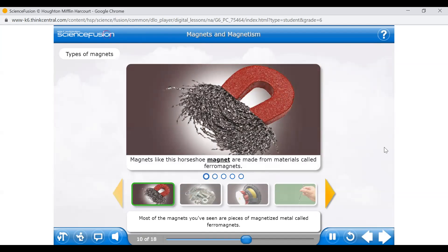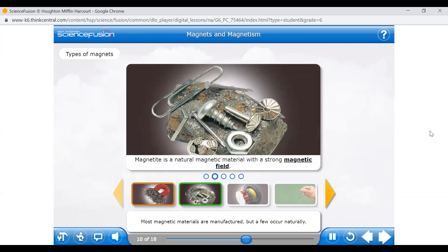Most of the magnets you've seen are pieces of magnetized metal called ferromagnets. Ferromagnets have domains that line up in the presence of an external magnetic field. A fraction of these domains stay aligned after the external field is removed, so the metal stays magnetized. Iron, nickel, cobalt, and gadolinium are all ferromagnetic metals.